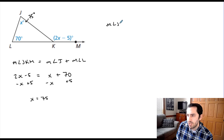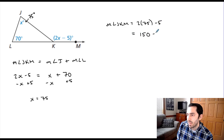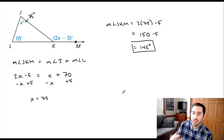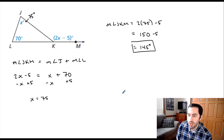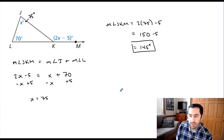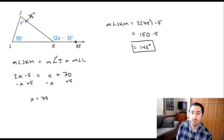The measure of angle JKM — substituting in 75 — is 2 times 75 minus 5, which is 150 minus 5, so our exterior angle is 145 degrees. That's how we can use the theorem: it gives us a way to set up equations and find how big these angles are. The exterior angle is equal to the sum of the two non-adjacent interior angles — and that's our exterior angle theorem.